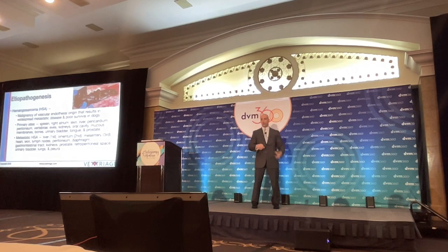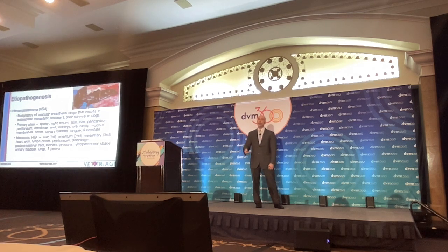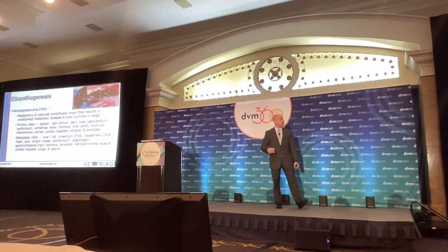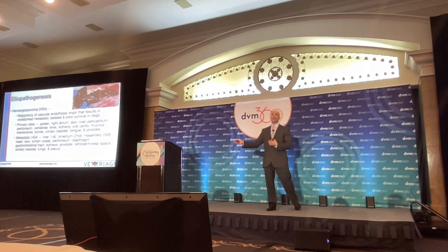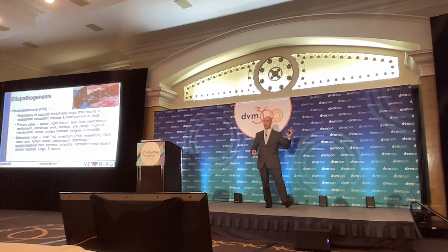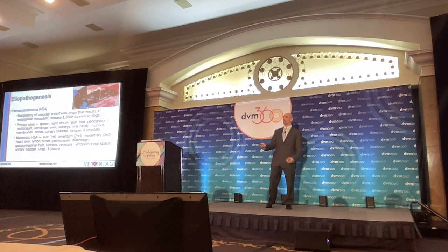Hemangiosarcoma will be our focus for this talk — it's the most common. It's the malignancy of vascular endothelial origin, results in widespread metastatic disease, and of course poor survival in dogs. There are lots of reported primary sites. The spleen is number one. When you look at metastasis from hemangiosarcoma, the liver is the most common site, the omentum is second, and the mesentery is third. But there are many areas of metastatic disease — I've seen it in vertebral bodies compressing the spinal cord, and suspected it on brain MRIs. When you have a cancer of the vasculature, it tends to spread via the vasculature, so it can go anywhere.